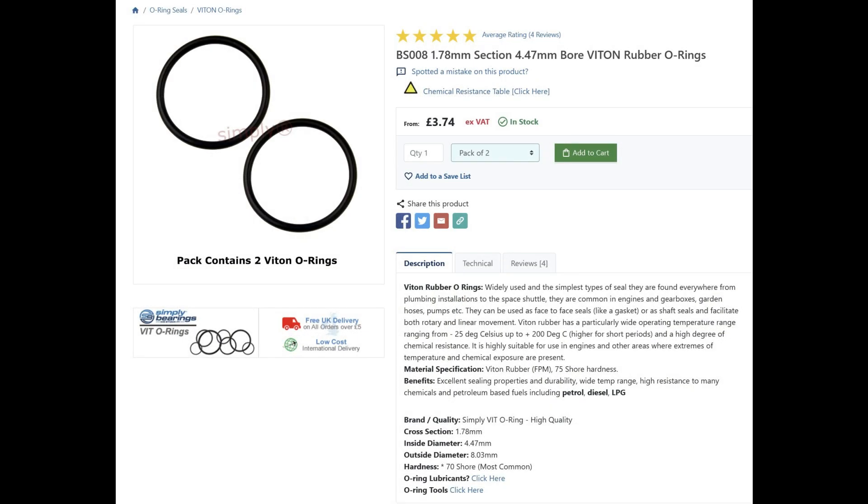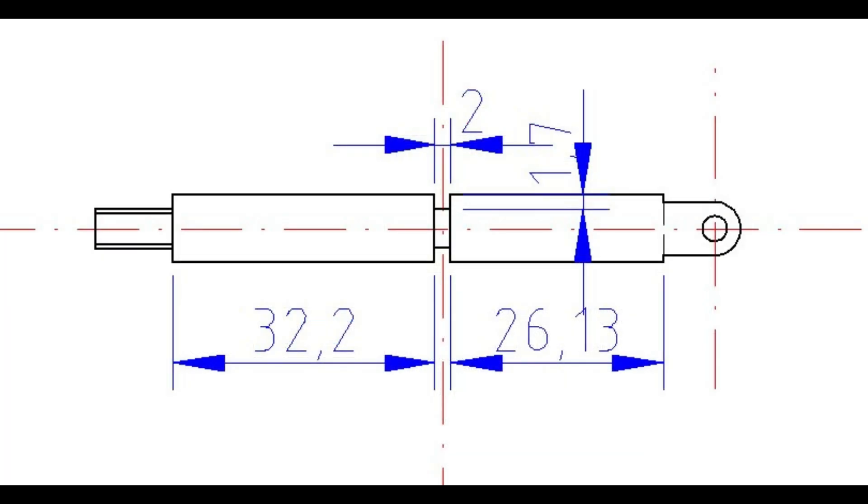So I selected some very slightly oversize on the OD Viton o-rings and I'm going to cut a rectangular slot in the valve spindle for them to be located in. The depth of the slot will be slightly under the section of the o-rings and the width will be around about 20% bigger.